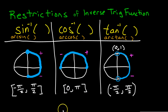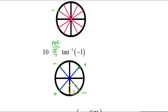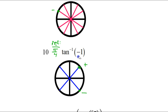Tangent is positive in the first and third quadrant and negative in the second and fourth quadrant. Keep in mind that inverse tangent is only defined on the right-hand side of the circle because of range restrictions. So we can forget about the left-side two. Furthermore, we want the angle whose tangent is negative 1, not positive 1. So the answer is negative pi over 4. The reference angle is pi over 4 and this is negative pi over 4.